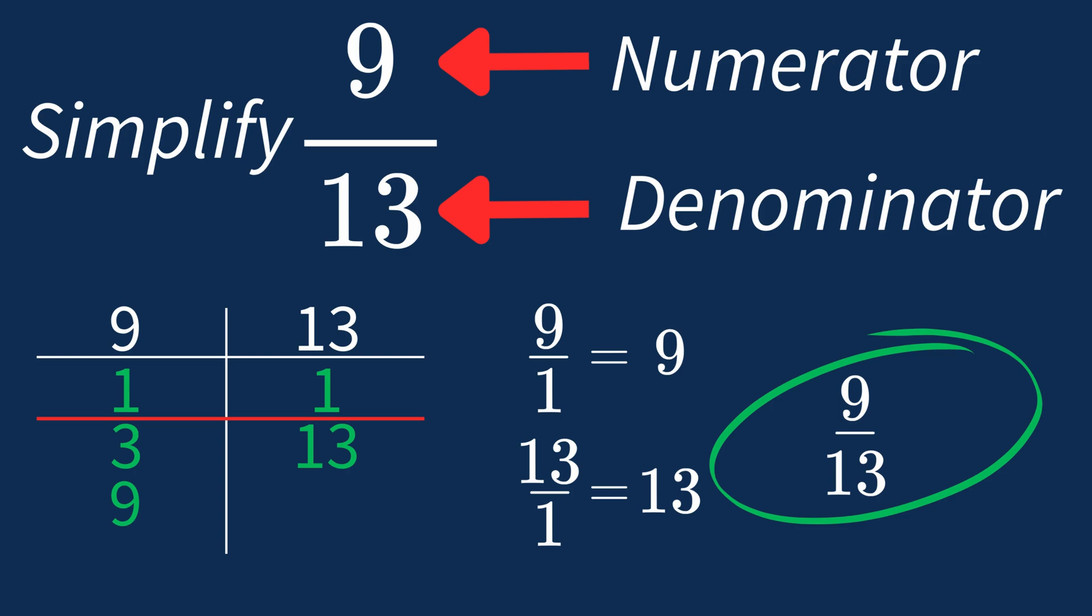There's no larger number that can divide both parts evenly. So 9 over 13 is an irreducible fraction, meaning it's as simple as it can get.